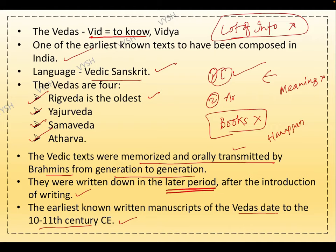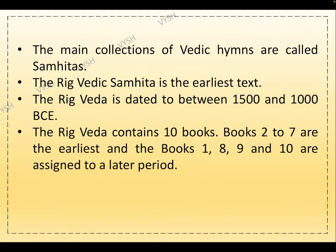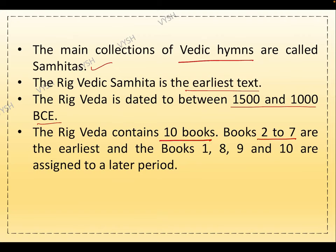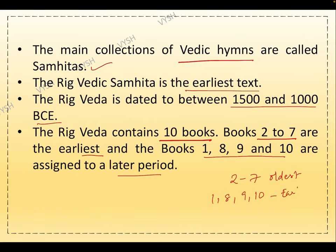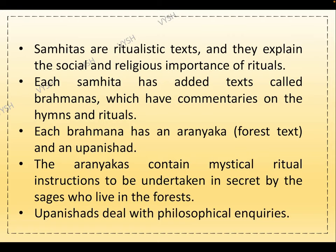The Harappan script was roughly contemporaneous or even earlier, but it has not been deciphered yet. The main collections of Vedic hymns are called Samhitas. The Rigvedic Samhita is the earliest text, dated between 1500 and 1000 BCE. The Rigveda contains 10 books — books 2 to 7 are the earliest, while books 1, 8, 9, and 10 are assigned to a later period.